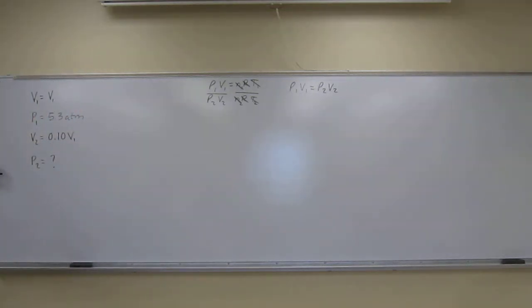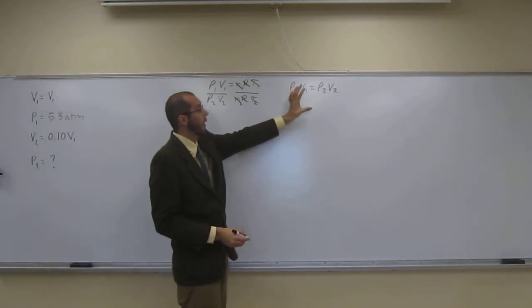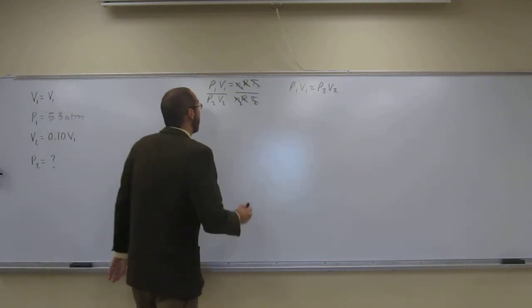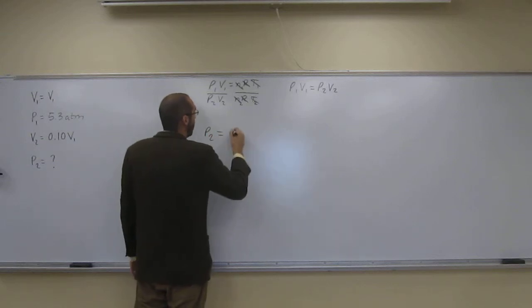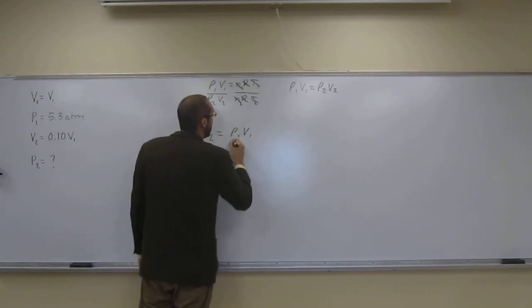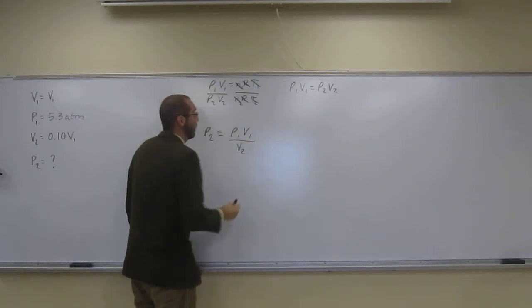So, let's go ahead and rearrange this equation. We're looking for P2. So, let's solve for P2. Let's rearrange here in order to solve for P2. So, P2 is going to equal P1 V1 divided by V2, like that.